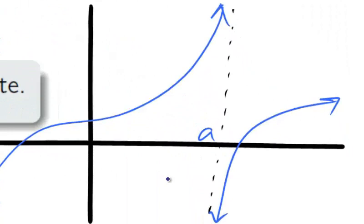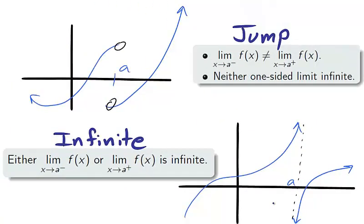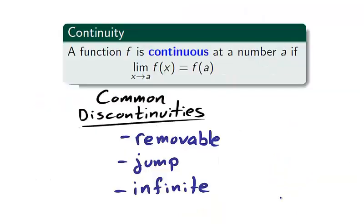Our last graph shows an infinite discontinuity. An infinite discontinuity is the case where a one-sided limit is infinite. The type of a discontinuity is not determined by the actual value f of a. It is solely determined by the limit.